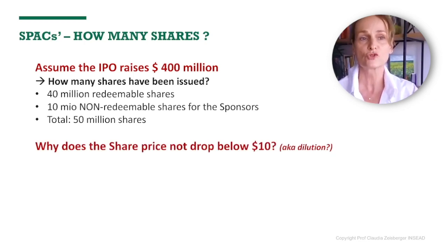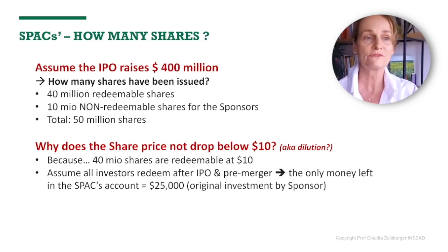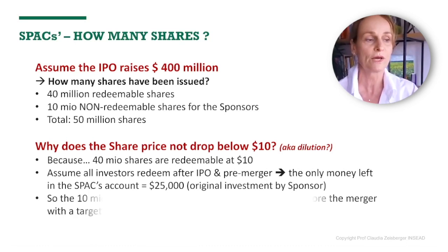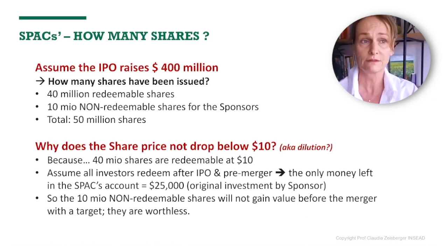You may wonder why the share price doesn't drop below $10 at this point, because you could argue there's some dilution since the sponsors receive 20% of the company. Well, the reason is simple: 40 million shares are redeemable, meaning they can be returned to the company at any point in time in return for the $10 that those investors paid at IPO. If all investors at IPO redeem post-IPO but before merger, the only money left in the shell company would be $25,000 — the original investment by the sponsors. That means the 10 million non-redeemable shares will really not gain value until a target has been acquired; until then they're worthless.